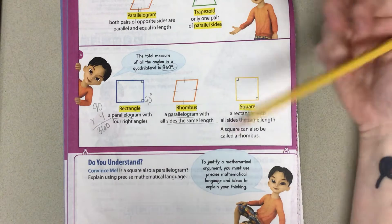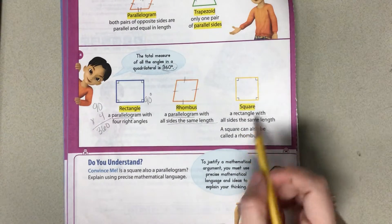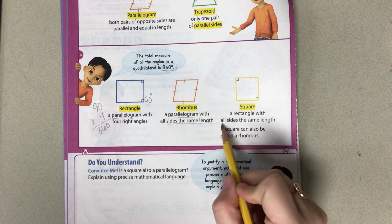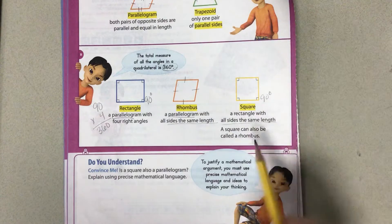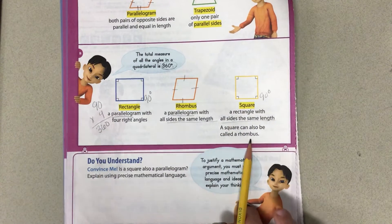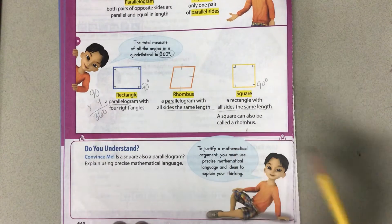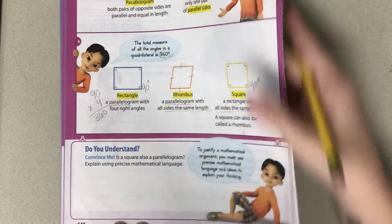Now a square has to have both. It has to have all sides the same length, and it has to have 90 degrees. A square can also be called a rhombus, but a rhombus can't be called a square, and we'll kind of talk about that as we go on.